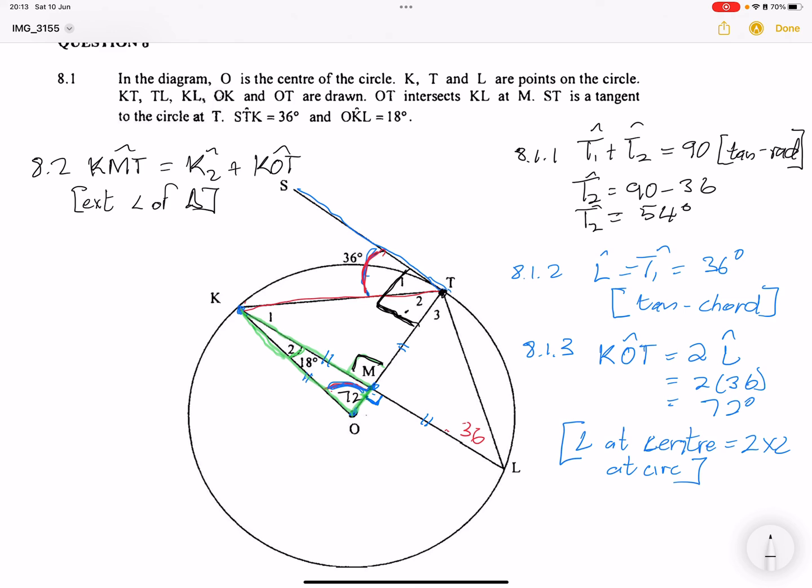And if you add them up, they give you 90 degrees. So what does that mean? It means that line OM is therefore perpendicular to KL. And what do we know? So in this case, the converse of theorem one: if the line that is drawn from center is perpendicular, therefore it means that it bisects the chord.